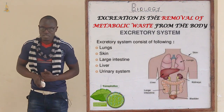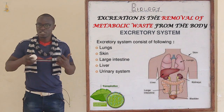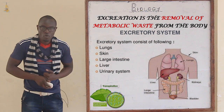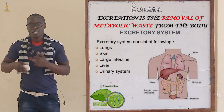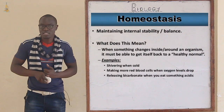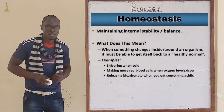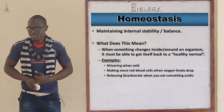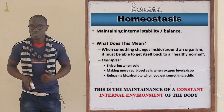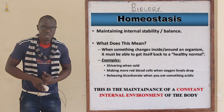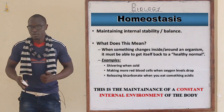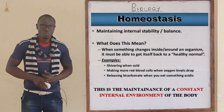Metabolic processes also release heat and cause changes in pH in the body. Therefore, a constant environment must always be maintained by the body, which is referred to as homeostasis. Homeostasis is defined as the maintenance of a constant internal environment of the body.